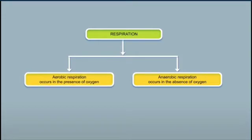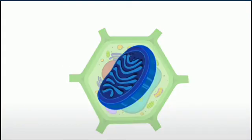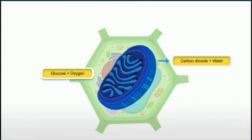During aerobic respiration, glucose is completely broken down into carbon dioxide and water. Energy is released in the form of molecules called ATP. Almost all living organisms, including plants and animals, carry out aerobic respiration.